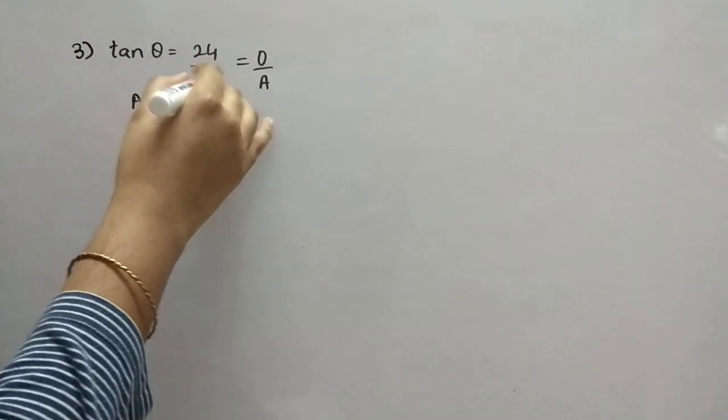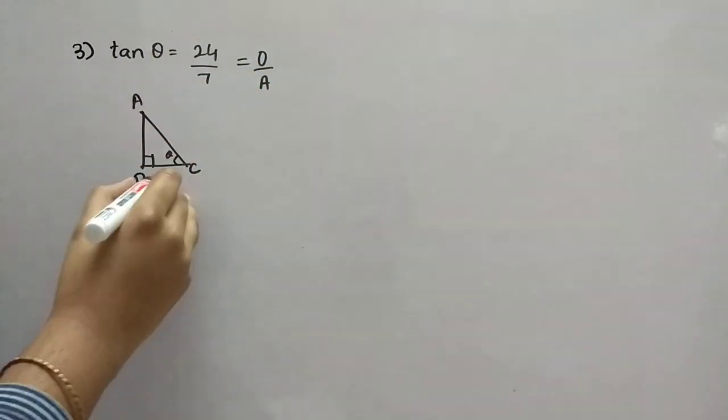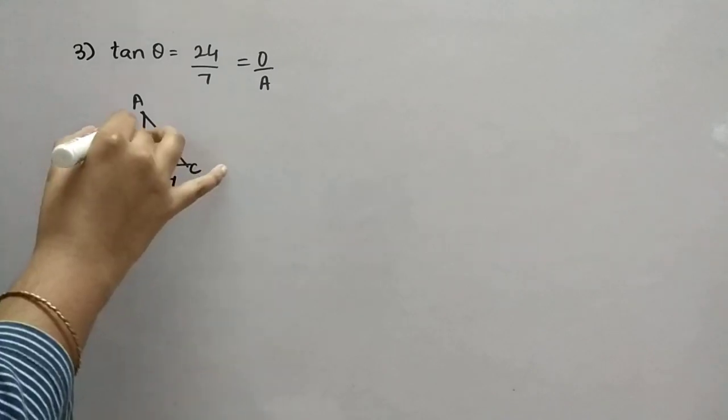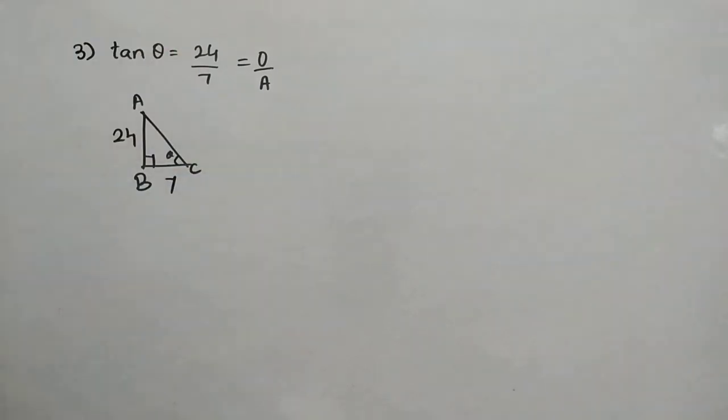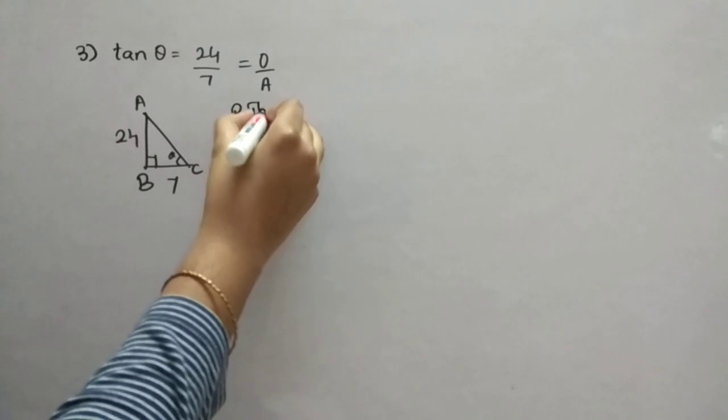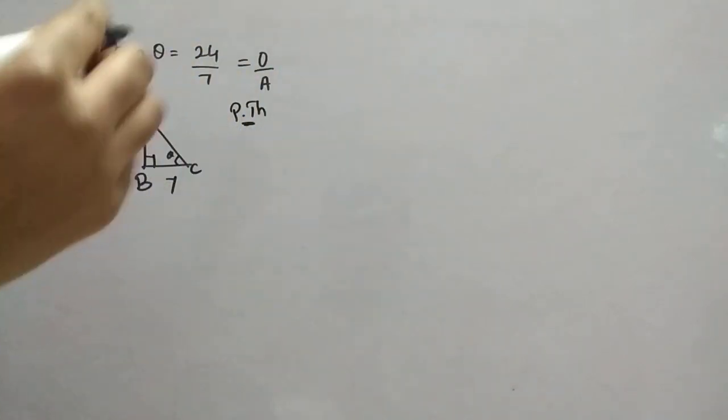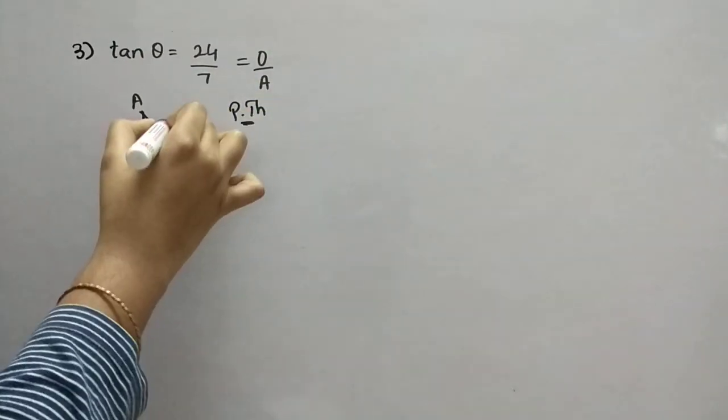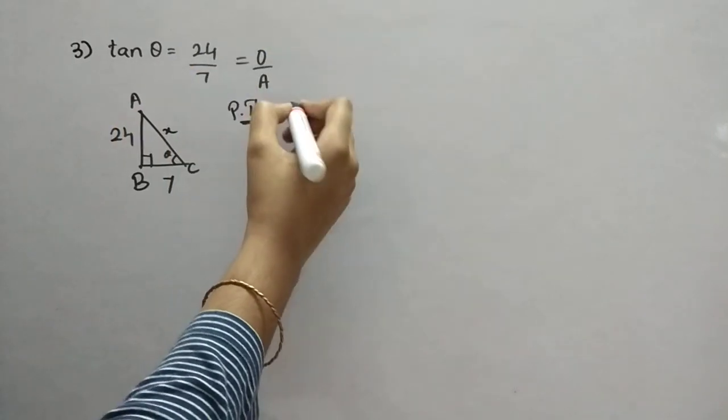Now, 24 by 7, opposite by adjacent. So, adjacent is this 7, opposite is 24. This one we have to find for finding secant theta plus cosecant square theta. So, for that, we will use Pythagoras theorem, right? Every time. So, this one we will consider as X. I am just directly doing now.